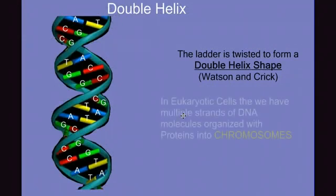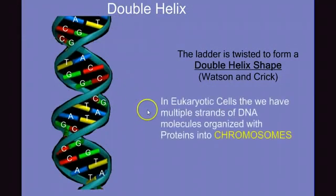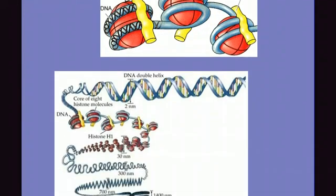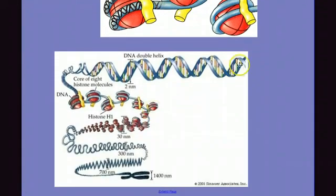In eukaryotic cells, we have multiple strands of DNA molecules organized with proteins into structures called chromosomes. So let's take a closer look at that structure. The DNA, here's our double helix like a thread, is wrapped around spools of protein. These protein spools are called histones. And in this bottom drawing, we can get a better understanding of kind of how this is all organized.